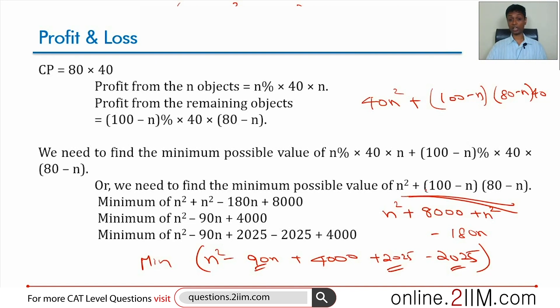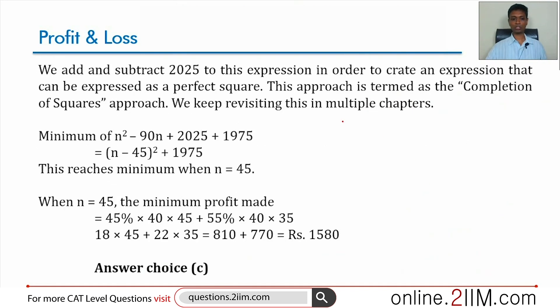This expression now simplifies to n square minus 90n plus 2025 plus 1975—that's the adjusting balancing term. This is n minus 45 whole square plus 1975.